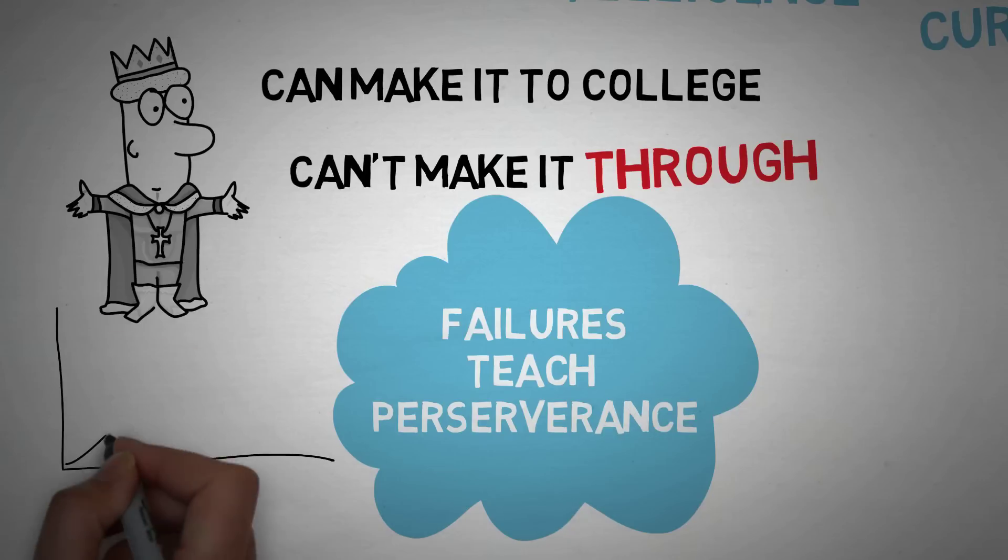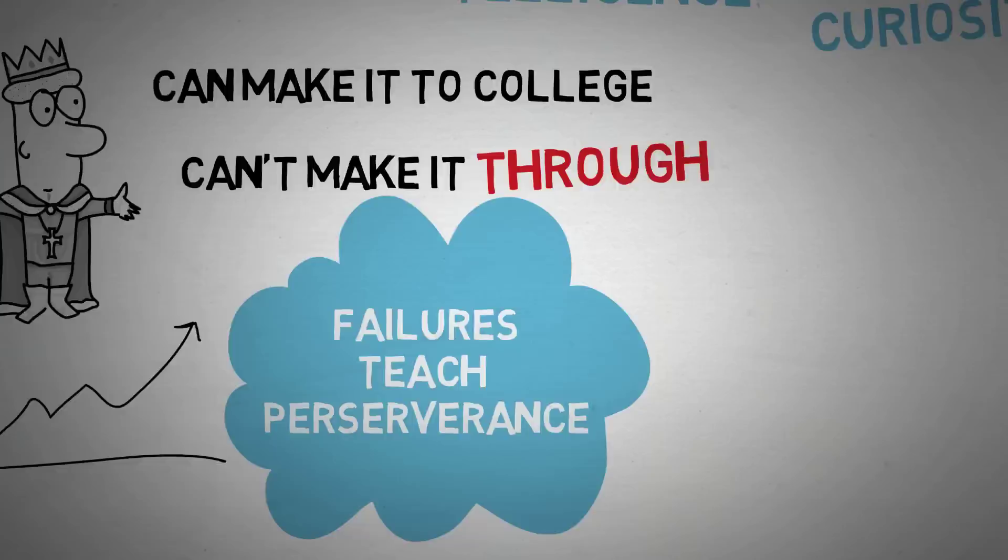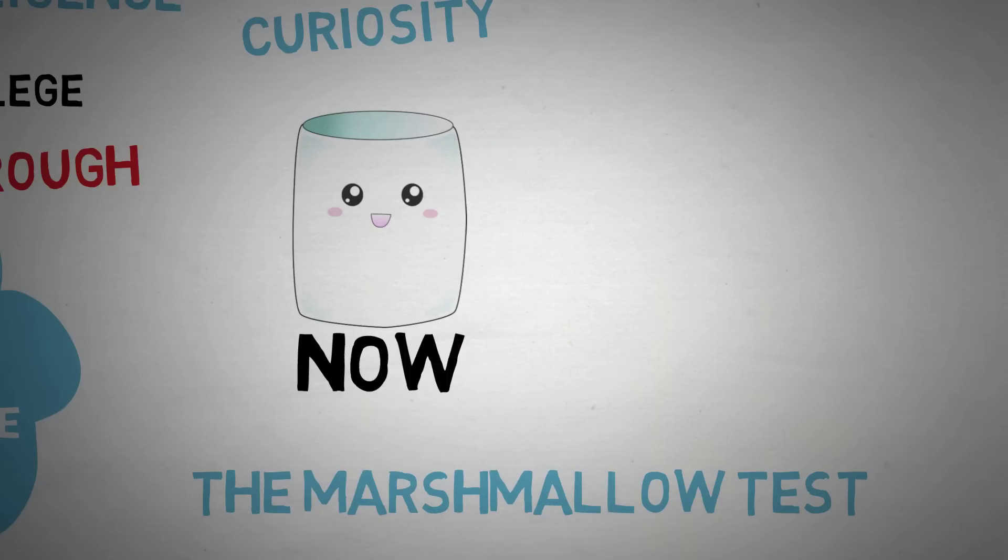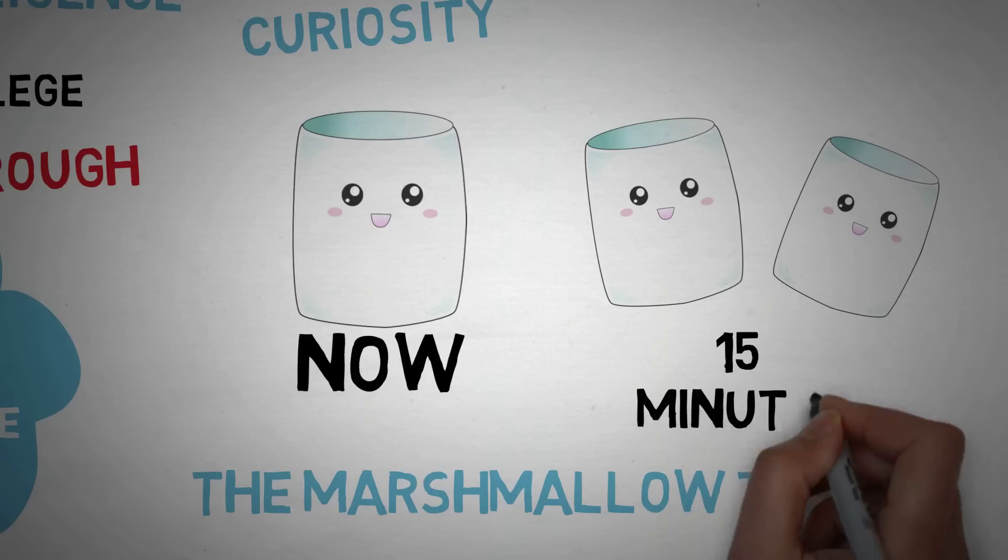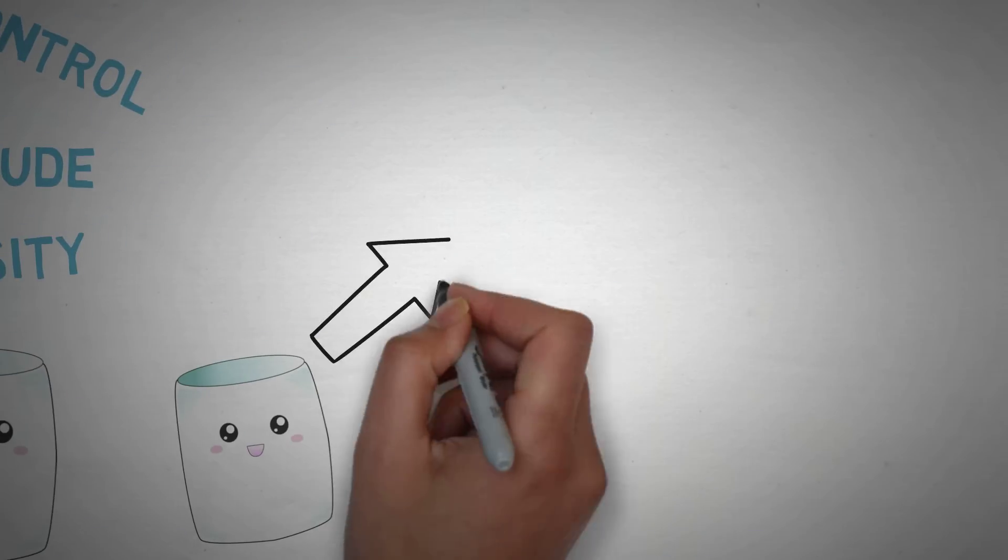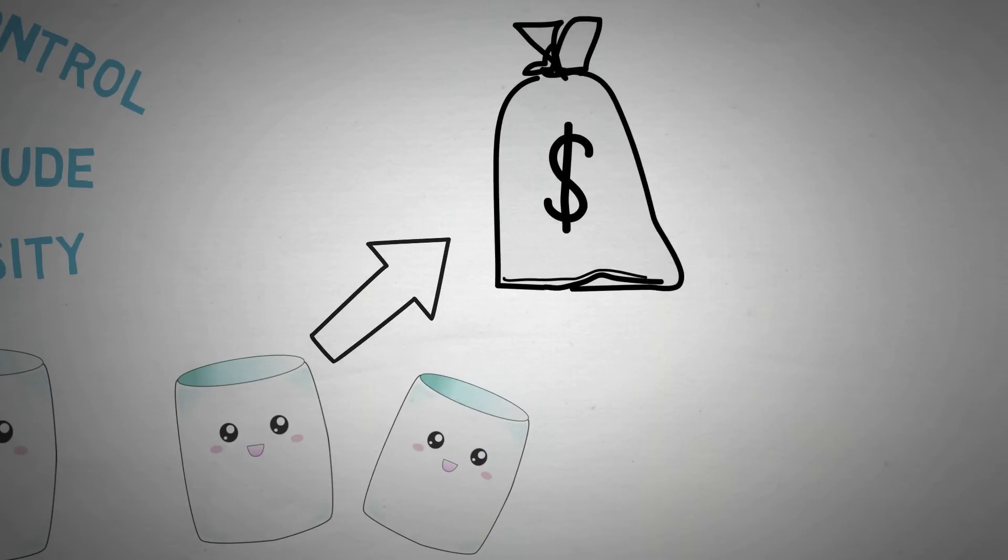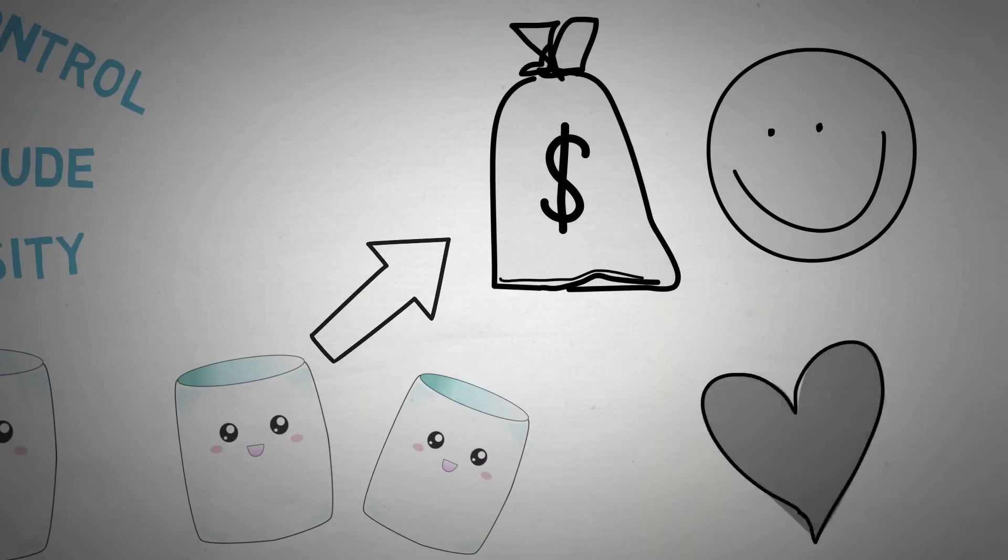And another thing on self-control, he found that this was very important. They did a test called the marshmallow test. And they performed this test by sitting children down and saying, here's a marshmallow. You can eat it if you want to. However, if you wait a mysterious amount of time, we will come back with two marshmallows and you can eat them. And what they found was, through a longitudinal study throughout the entire children's life, those that had the self-control to wait for the two marshmallows were more successful. They had better self-control.